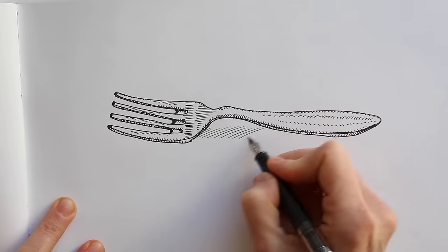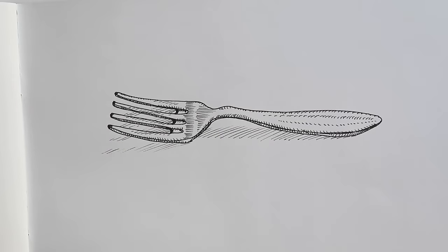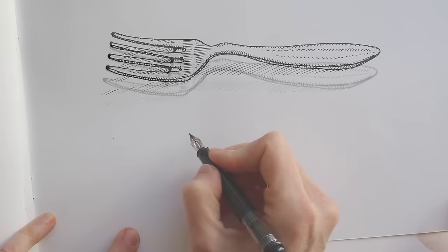Don't forget to add the drop shadow too, to make your subject sit on a surface rather than float on the paper. I'll do it again, drawing a spoon.